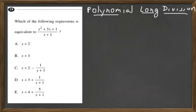Question 18. Which of the following expressions is equivalent to x squared plus 3x plus 1 all over x plus 1? This is solved using polynomial long division, which is just like the regular long division you learned in school, but a little more complicated. I'm not going into all the steps here, so go ahead and Google this if you need to. But let's go ahead and set it up.